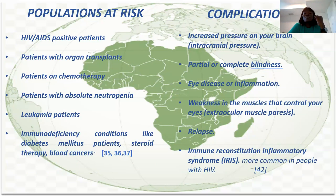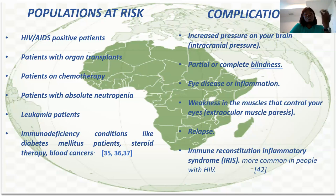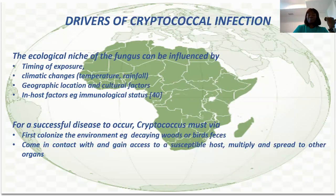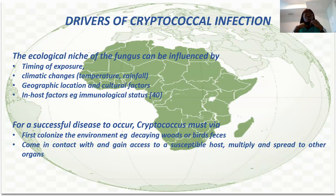Those at risk of cryptococcosis include HIV patients, patients with organ transplants, patients on chemotherapy, patients with leukemia, patients with diabetes, and patients with blood cancer — essentially those whose immune system is already suppressed. Complications include blindness, muscle weakness controlling the eyes, and relapse — even after treatment, a person can get the disease again. Immune reconstitution inflammatory syndrome can also happen, mostly in people with HIV. Factors driving infection include timing of exposure, climate change factors like temperature and water availability, and immunological status.